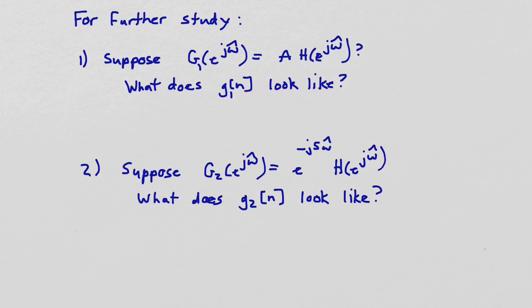And the other question we could ask is, suppose we had a new frequency response, G₂(e^(jω̂)), defined as multiplying H(e^(jω̂)) by e^(-j5ω̂), and ask, what does G₂ look like in this case? So what I'd encourage you to do now is pause the video and try and figure out your answers to these two questions.